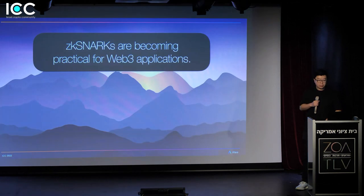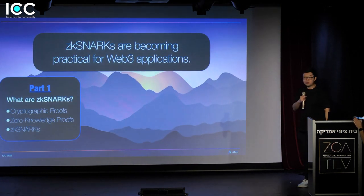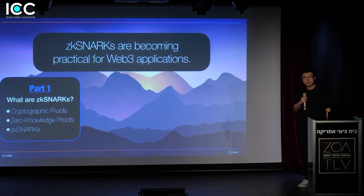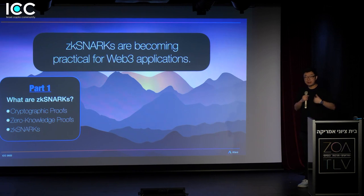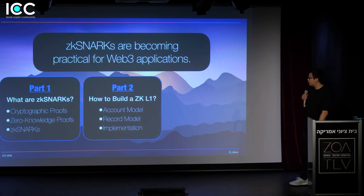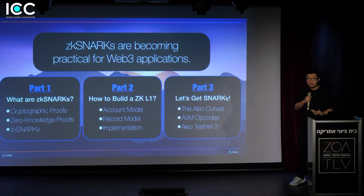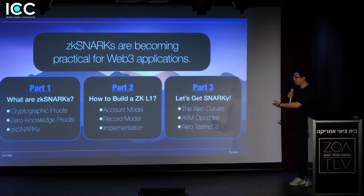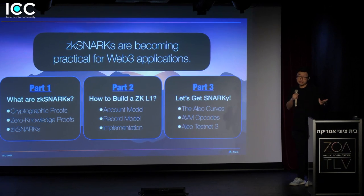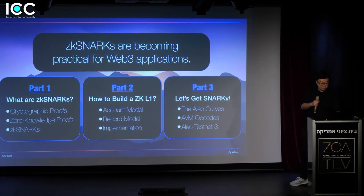Today I want to talk about three things. First, there's been a lot of buzz about zero-knowledge proofs and ZK-SNARKs specifically. I want to demystify what this means by introducing the technology and explaining how it works. Second, I want to show you how to use zero-knowledge to build a layer one off of it. And lastly, to show you how we instantiated a ZK layer one, which we call Aleo.